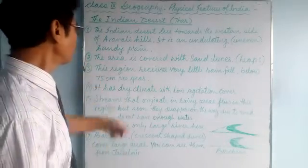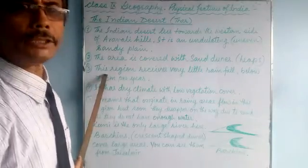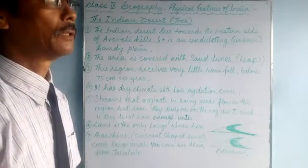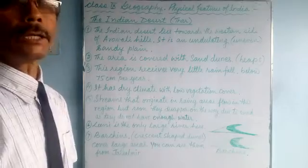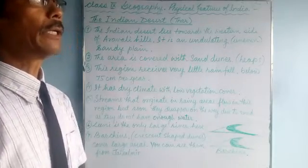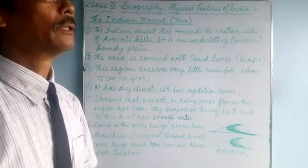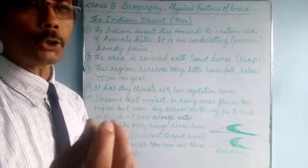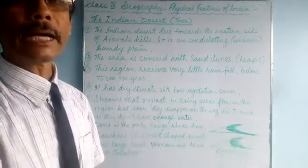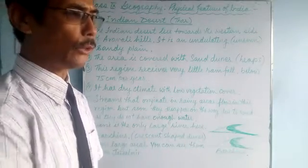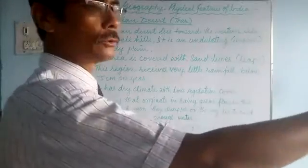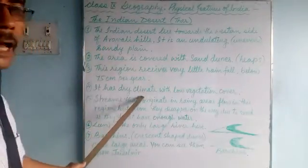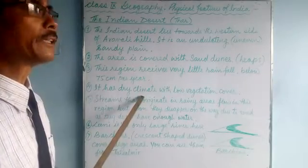This desert region receives very, very little rainfall — below 75 centimeters — so there is scanty rainfall. That's why there is very little vegetation; the area is so dry. The fine particles of mud or soil are blown away, and only the heavier, coarser, rougher sand particles are left behind. Sometimes those are blown away too, but not very far, and they stack up to become sand dunes.